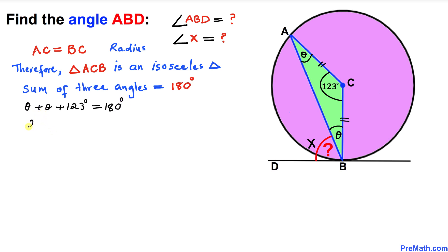Now let me subtract 123 degrees from both sides. We end up with 2 theta equals 57 degrees. Let's divide both sides by 2, so we get theta equals 28.5 degrees. Thus, this angle over here turns out to be 28.5 degrees.